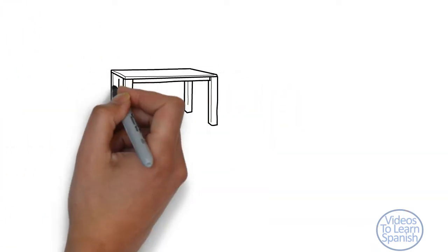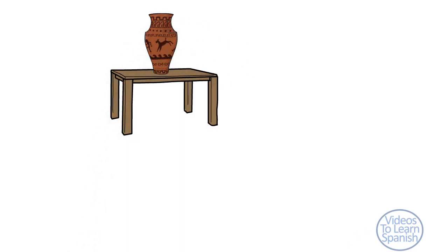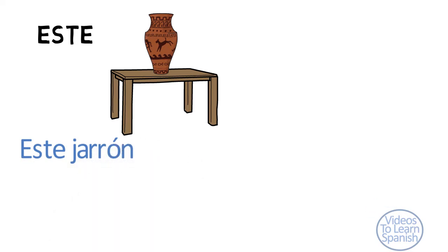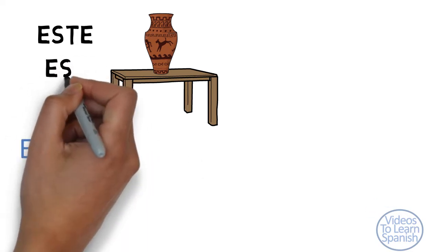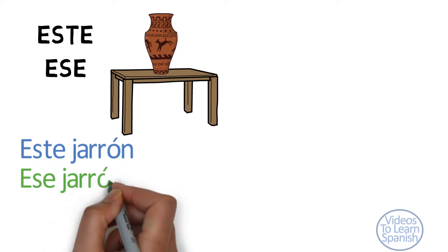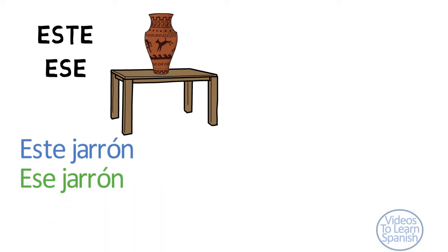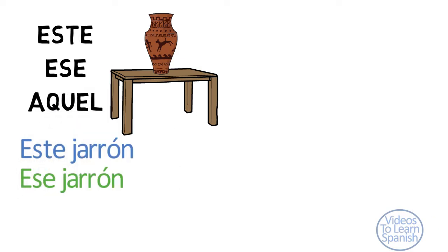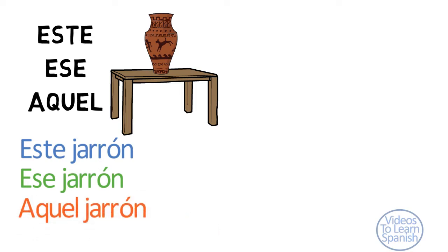When we talk about an object that is in the area we have previously called aquí, we use the word este, the Spanish equivalent of 'this'. Este jarrón — this vase. If the object is in the ahí area, then we will use ese instead, the Spanish equivalent of 'that'. Ese jarrón — that vase. If the object is in the allí area, then we will use aquel, the Spanish equivalent of 'that one over there'. Aquel jarrón — the vase over there.